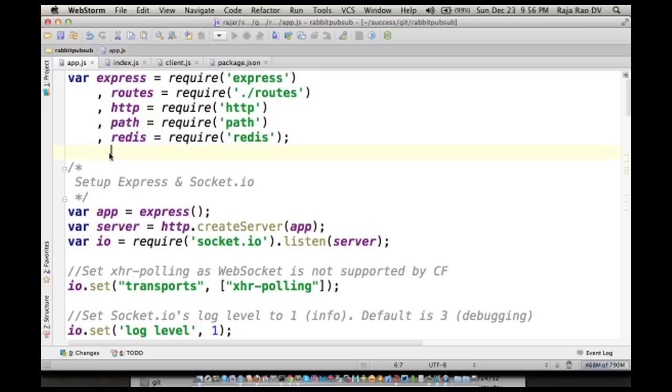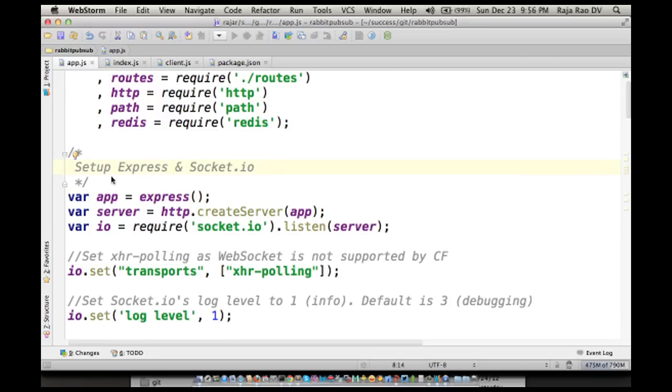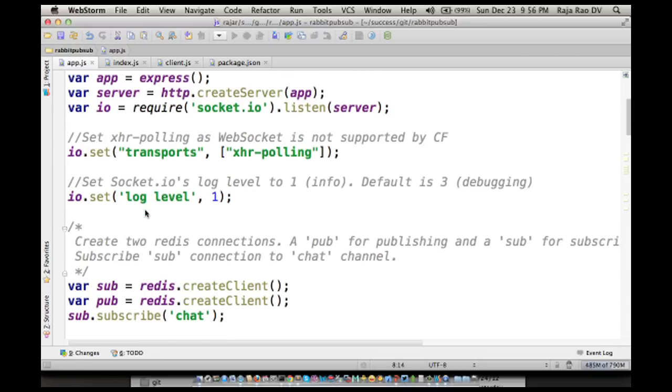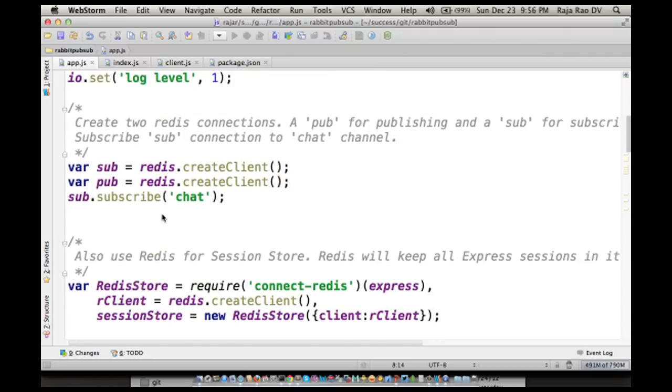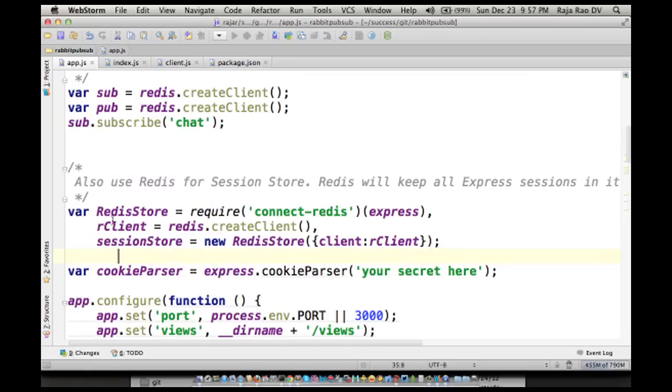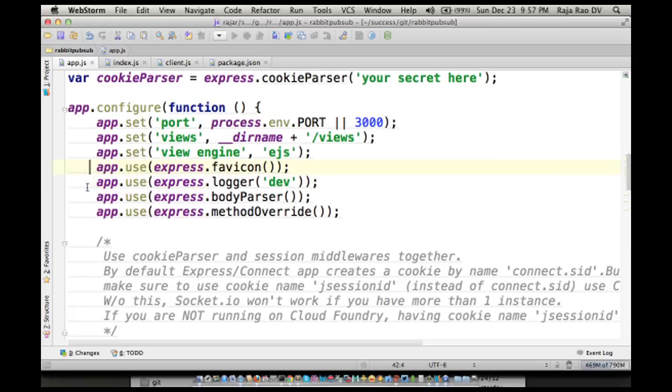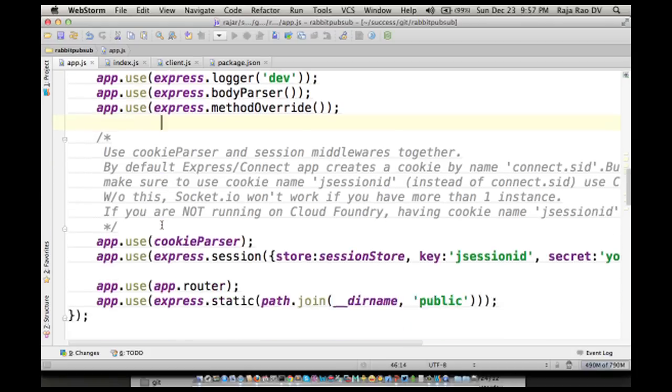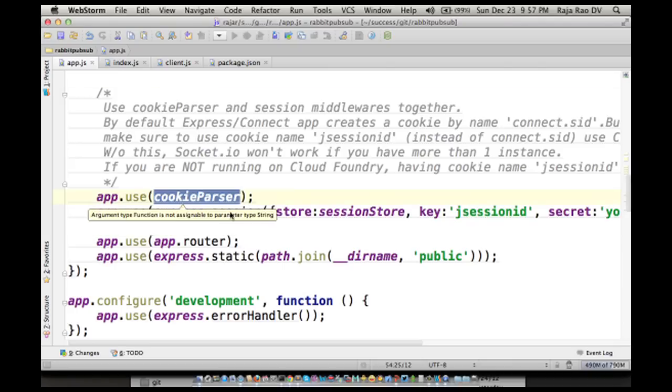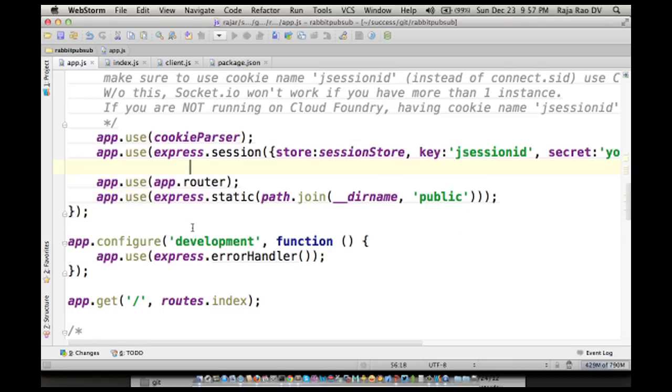Let's take a quick look at the existing code and then I will show you what things we are going to change. This is an Express app. Here we are setting up Express and Socket.io, and we're also setting some configurations for Socket.io like transports to xhr-polling and the log level to one. Here we are setting up two Redis clients to do pub-sub, so this piece we are going to change to use RabbitMQ later in the video. And here we are creating Redis store to store sessions.